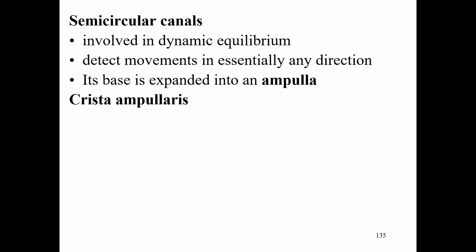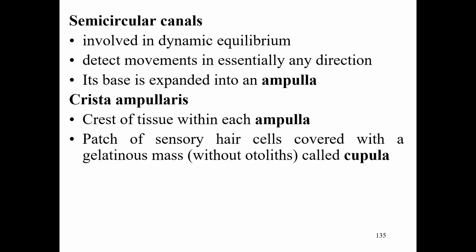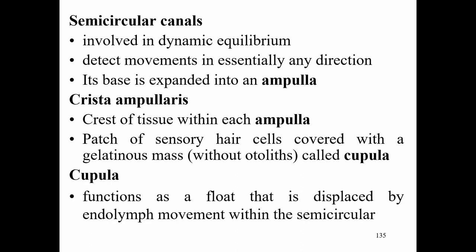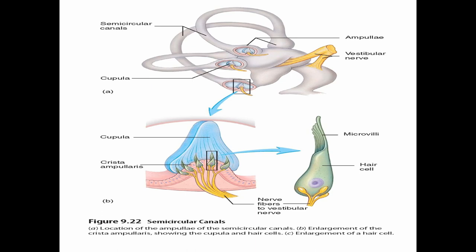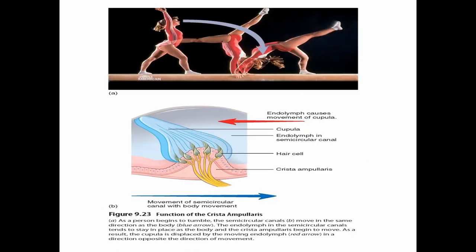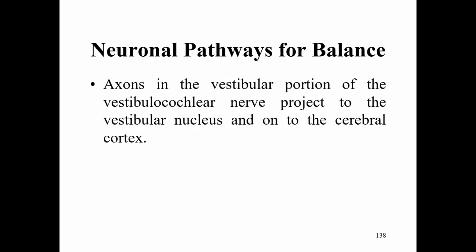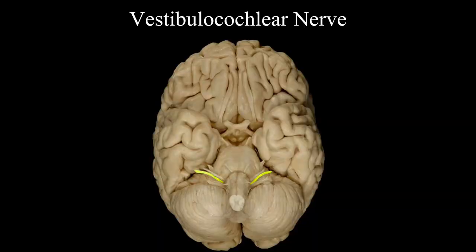The semicircular canals are involved with dynamic equilibrium and can detect movements in essentially any direction. Each base is expanded into the ampulla, which contains the crista ampullaris — a patch of sensory hair cells covered with a gelatinous mass called the cupula. The cupula functions as a float displaced by endolymph movement within the semicircular canals. Action potentials in the vestibular portion of the vestibulocochlear nerve project to the vestibular nucleus and on to the cerebral cortex.